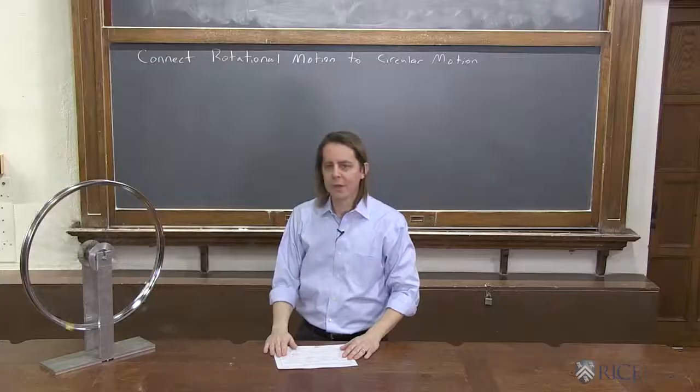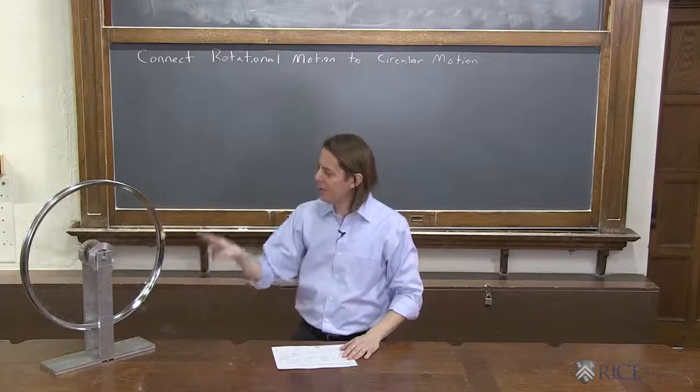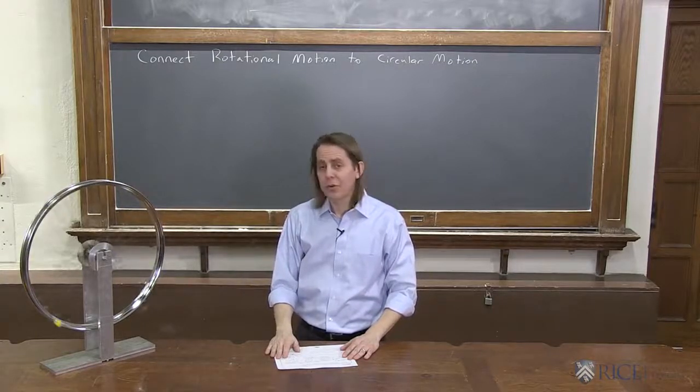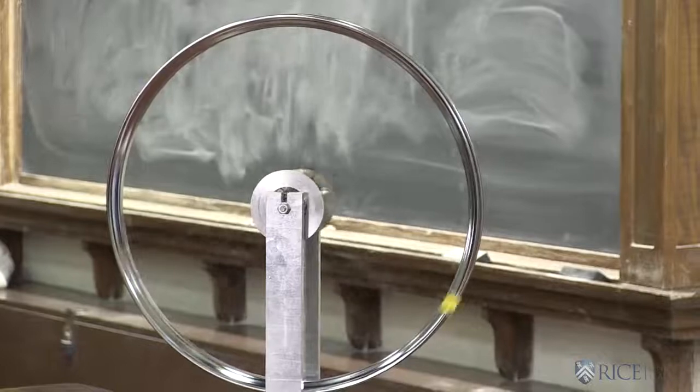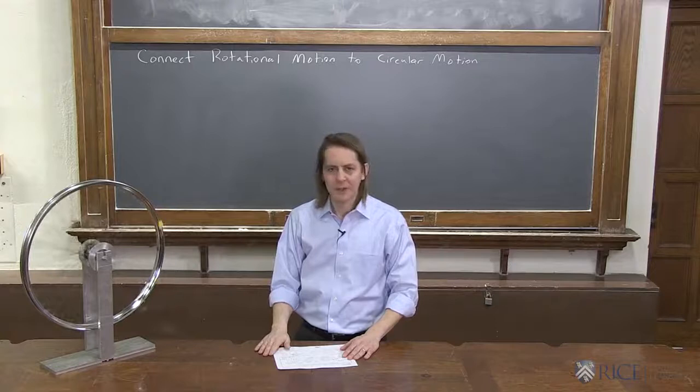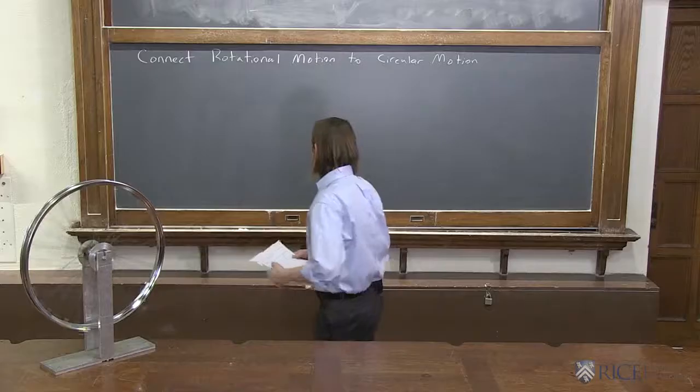So the wheel's rotating, but that little point, the yellow piece of tape, is going circular. Circular is a special kind of translational motion, so if you zoom in really tight on that yellow piece of tape and watch it fly by, if you just look really narrow, it looks like it's just flying by in 1D motion with a little bit of curvature. So these are the connections we want to think about.